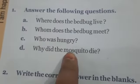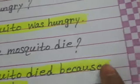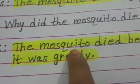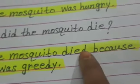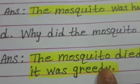Question 1D: Why did the mosquito die? Answer: The mosquito died because it was greedy.